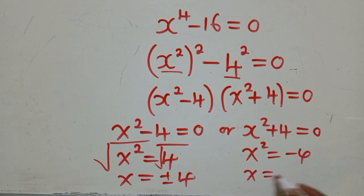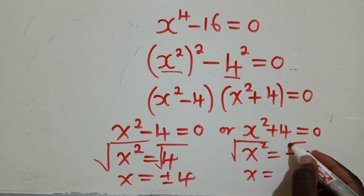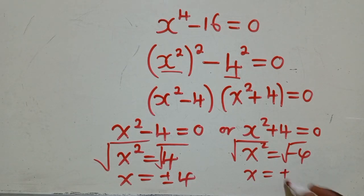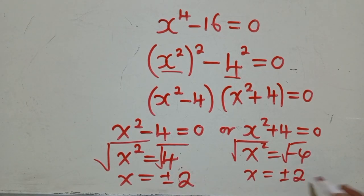This side, X will be equal to, if we do the same, X will be equal to positive or negative 2 here. 2I. So, we're going to put I here. The reason why we're putting I, it's because of the negative sign. The negative sign will mean we're dealing with a complex number.